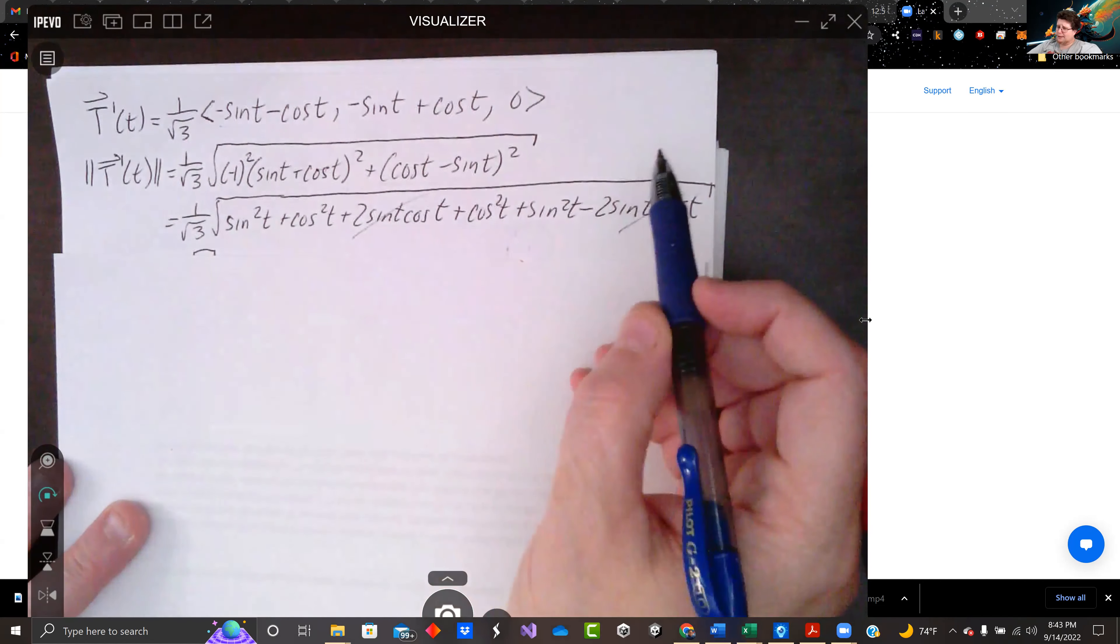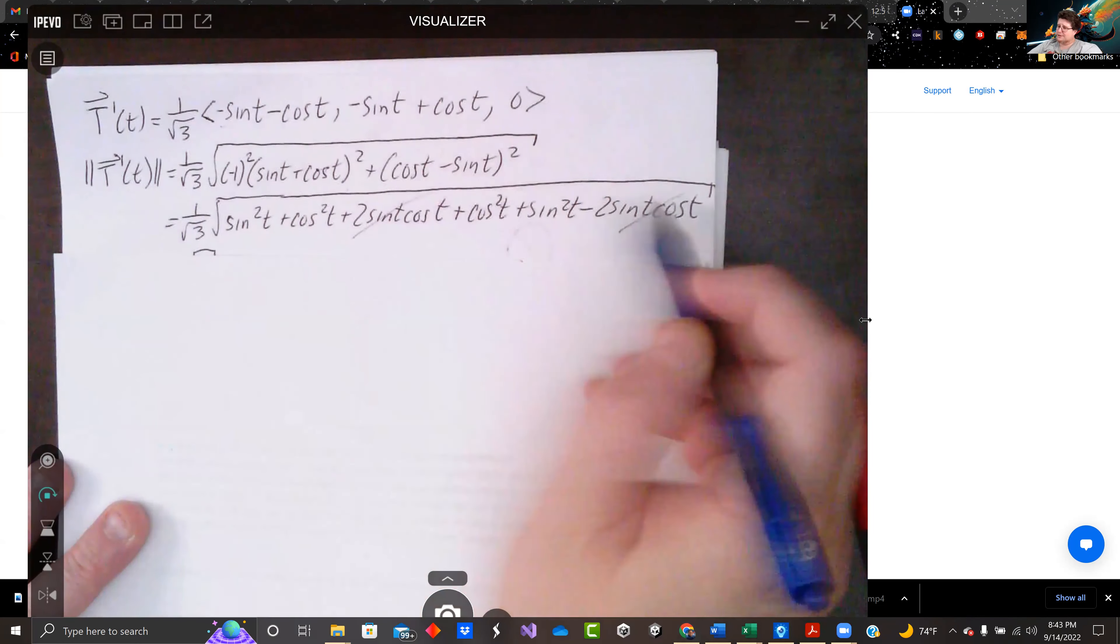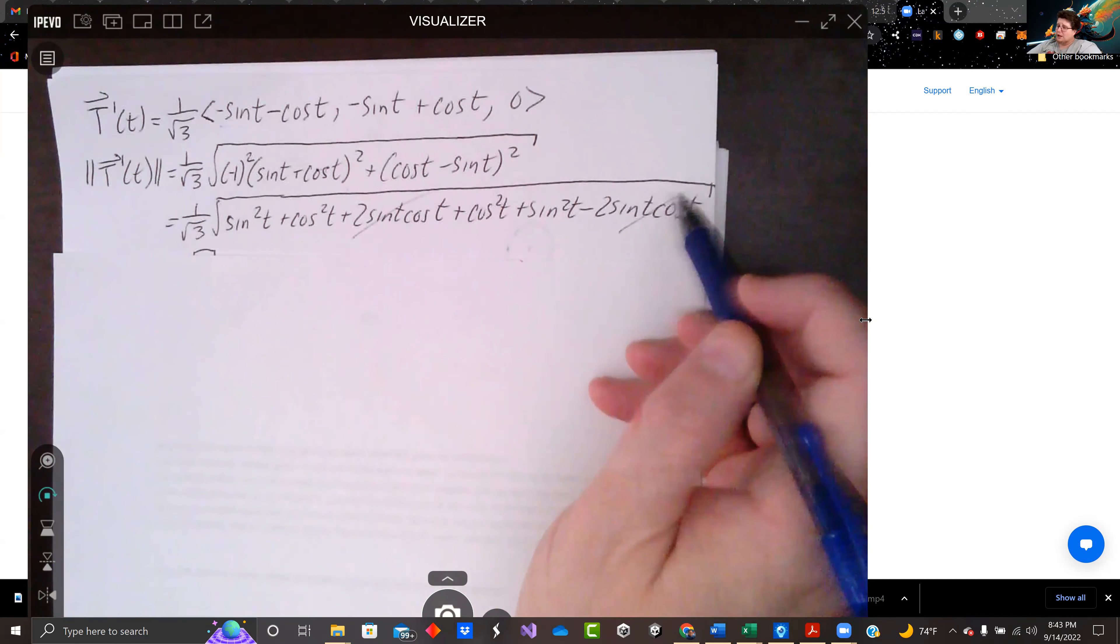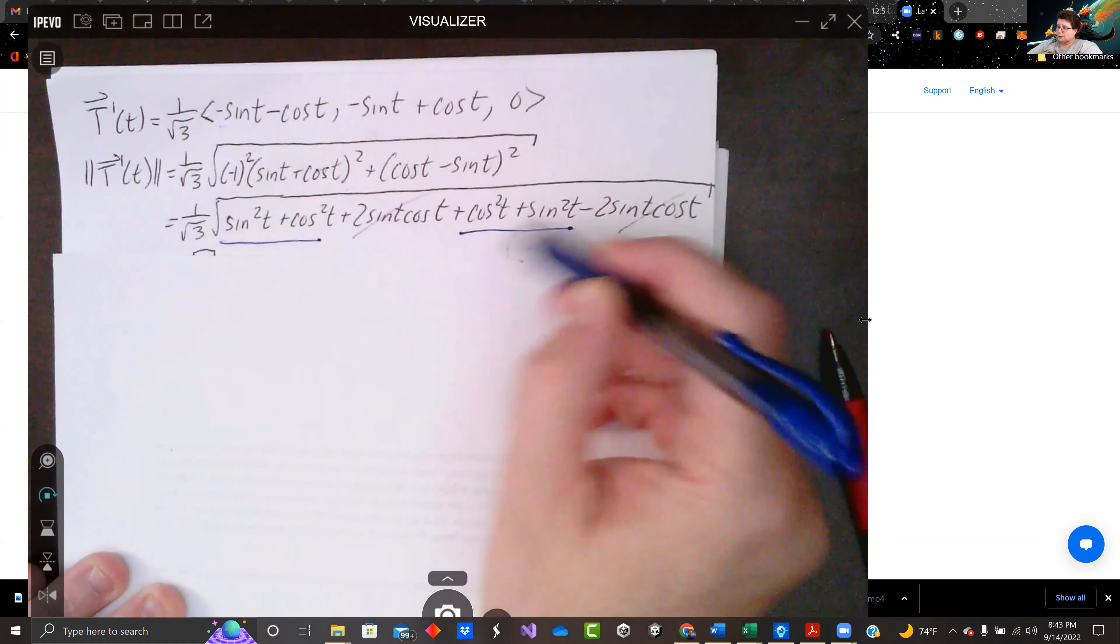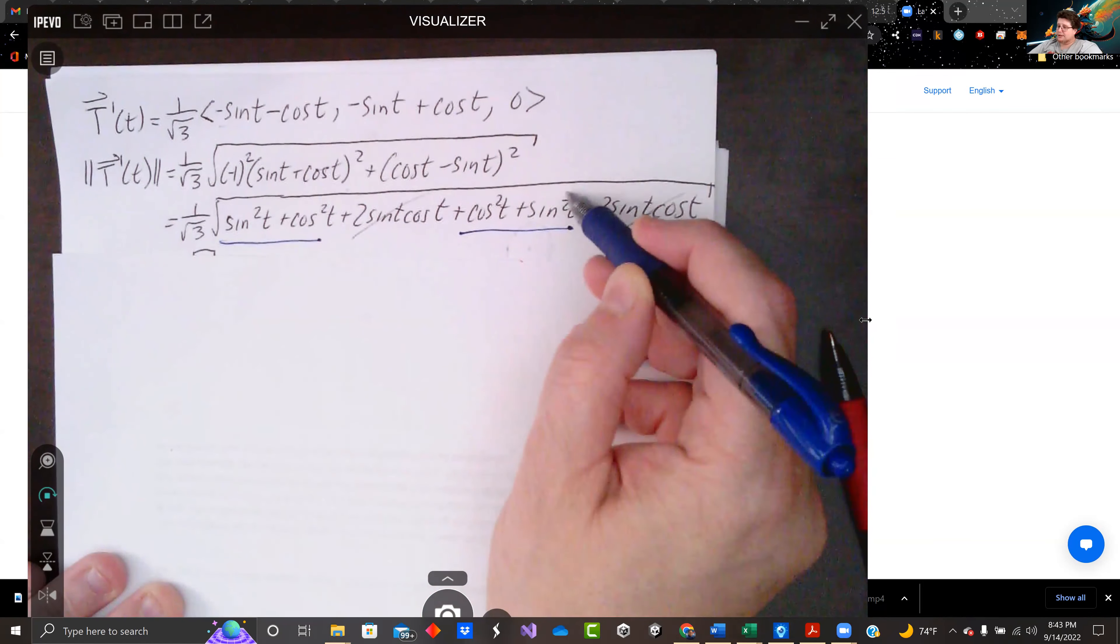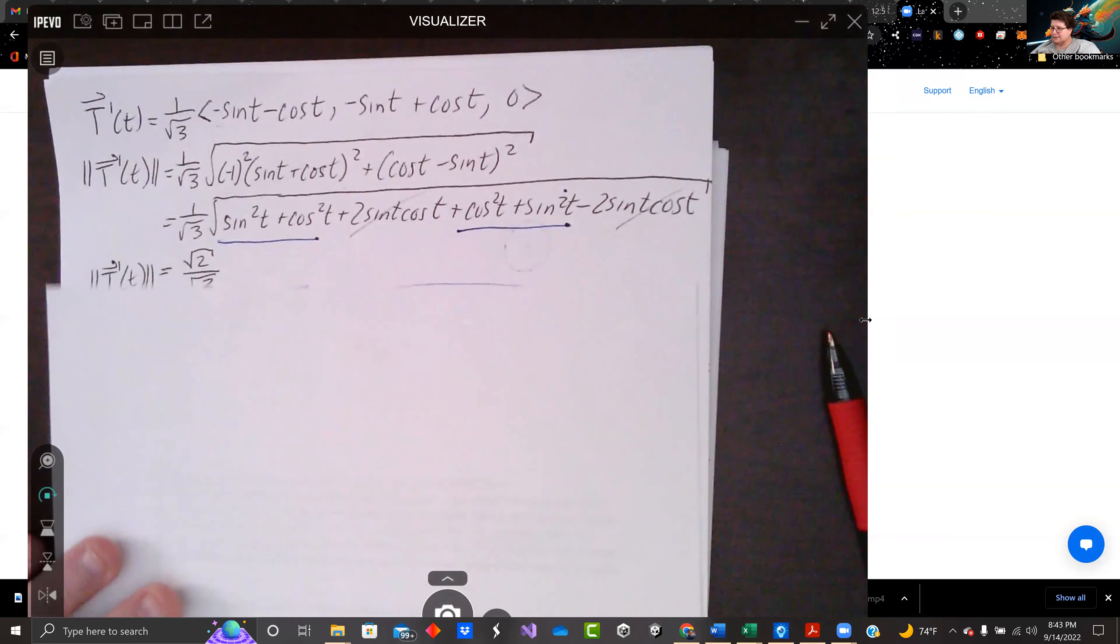We get some two sine t and some negative two sine t to cancel. We've got one here. We've got one here. That's a root. That's two under the root. So t prime of t is just root two over root three.